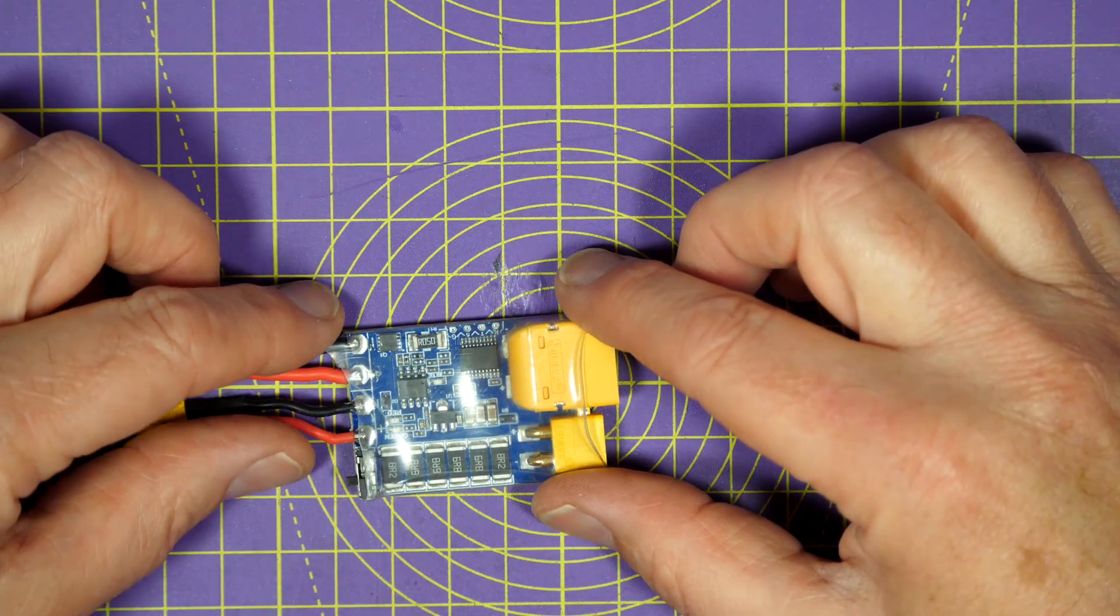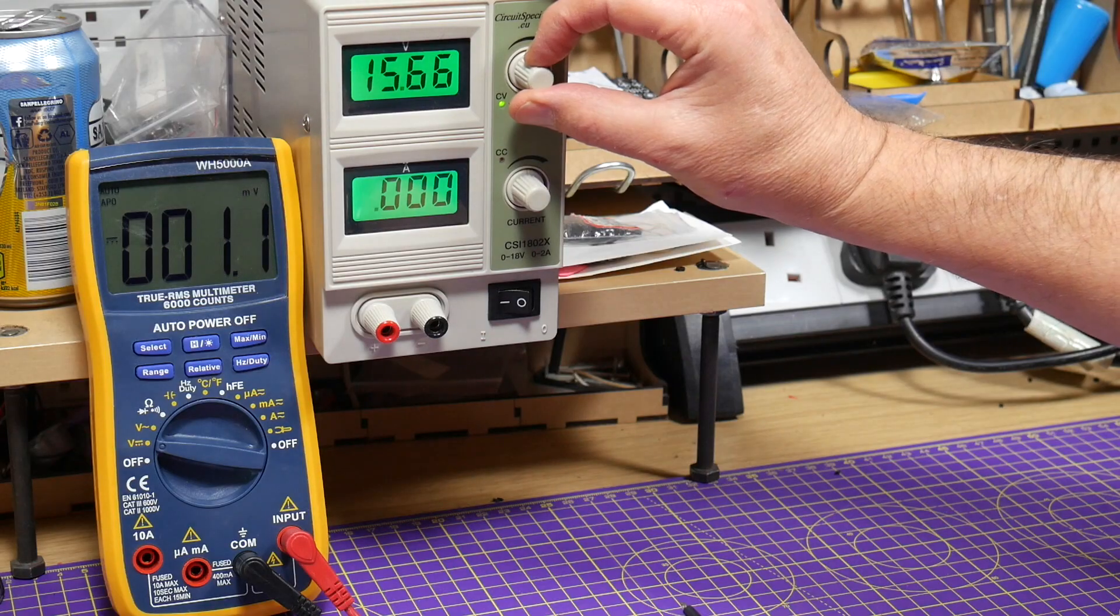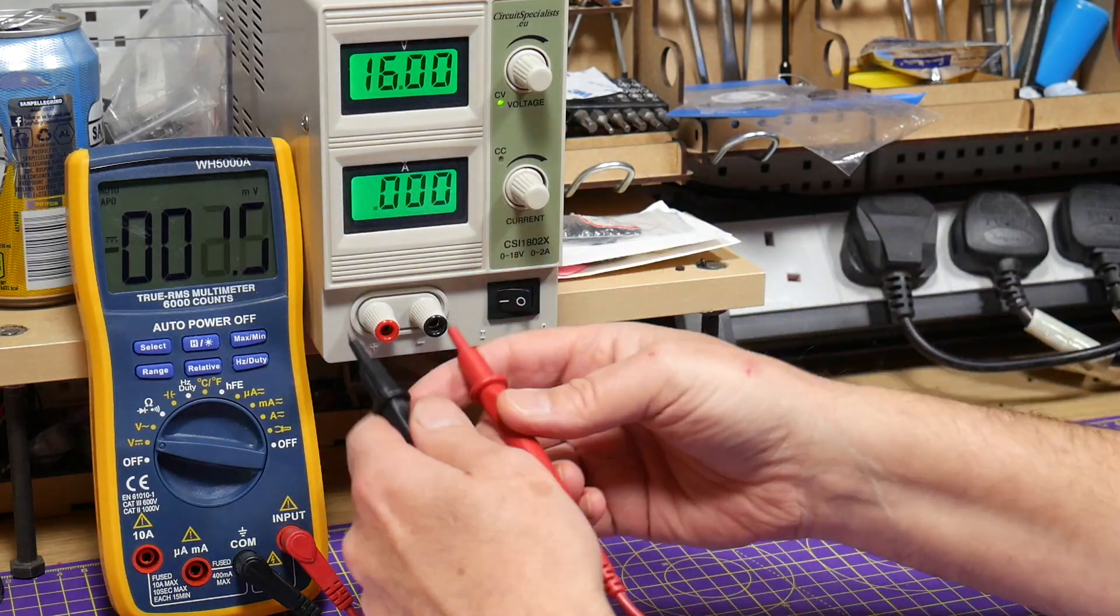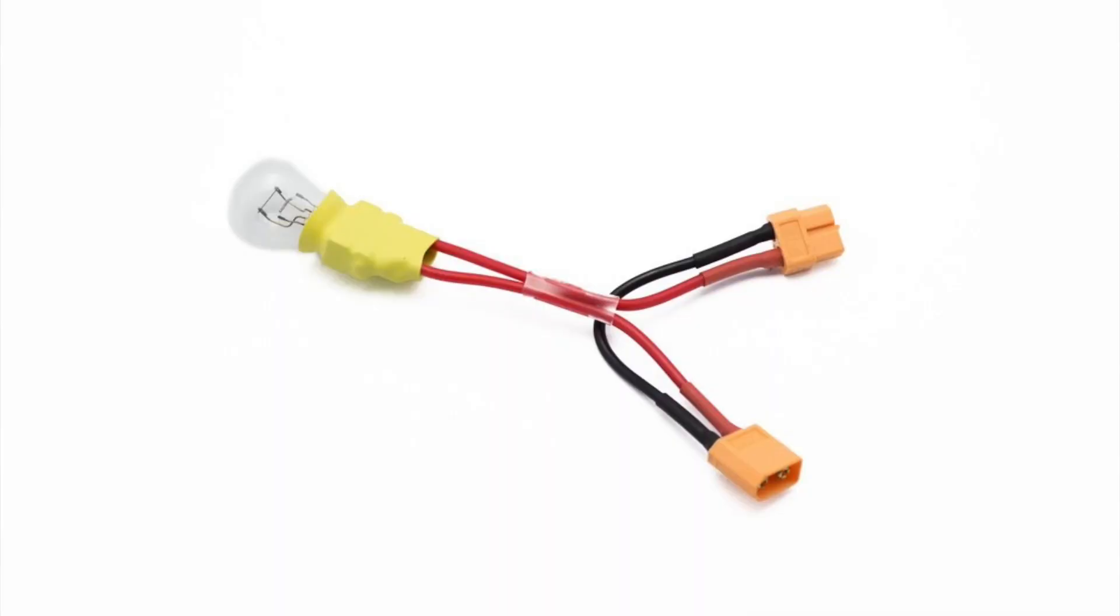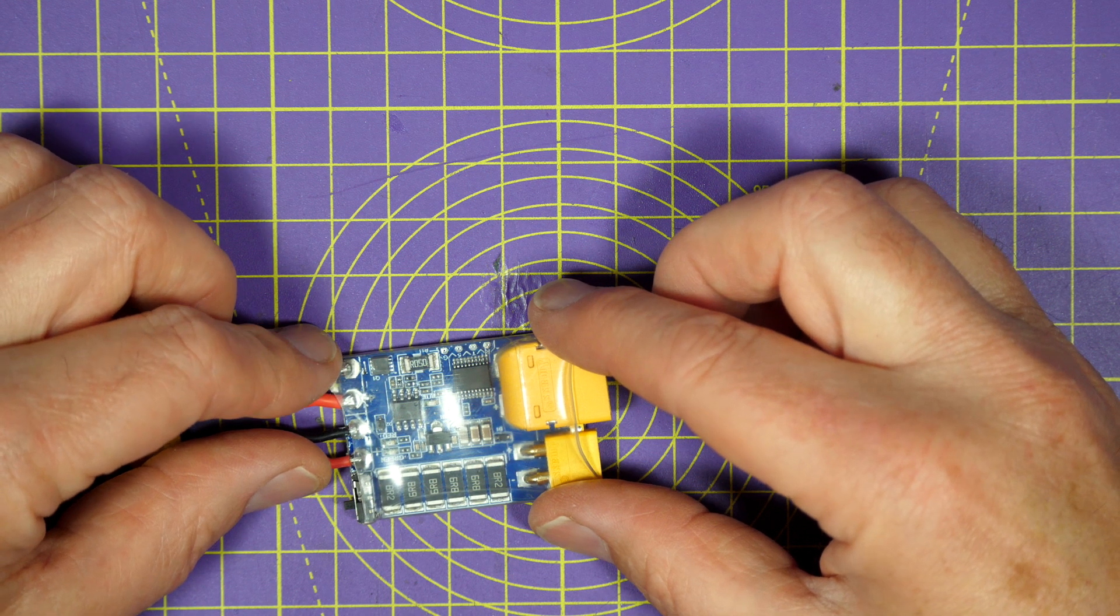You could use a current limiting bench power supply and I did a whole video on this last year, or if you don't have one, build yourself a smoke stopper. That's just a couple of XT60 connectors and a car bulb that acts as a current limiter.